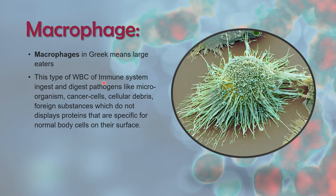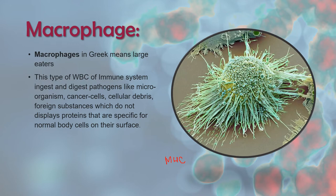This type of leukocyte of the immune system ingests and digests pathogens like microorganisms, cancer cells, cellular debris, and foreign substances which do not display proteins specific for normal body cells on their surface. The body cells display MHC molecules, and these MHC molecules display antigens which may be self or non-self. If a substance fails to display MHC molecules, then the macrophages consider it a foreign substance and phagocytose it.